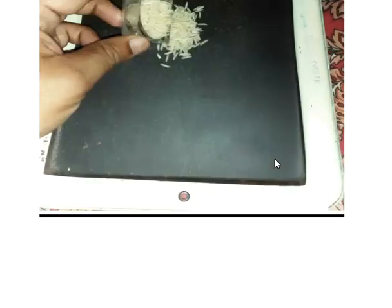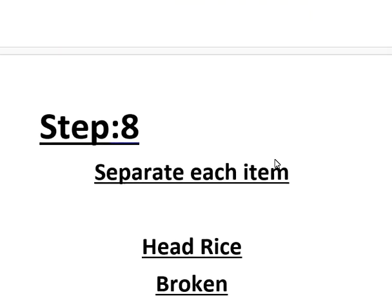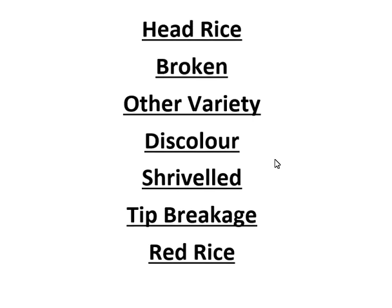In the next step, pour the rice onto the tray. This is the major step: you have to separate each and every component. You look at the rice — there are broken grains, you put them in a separate place; there are grains which are damaged or discolored, you put them in another separate place.